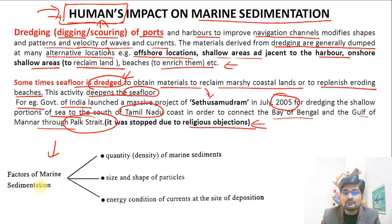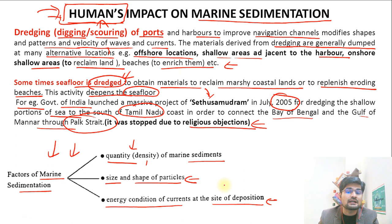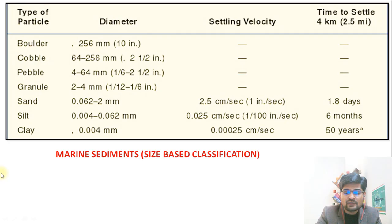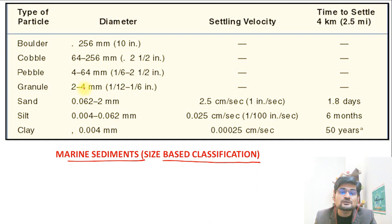The factors for marine sedimentation include: quantity and density of marine sediments, size and shape of particles, and the energy condition of currents at the site of deposition. Now for a size-based classification of marine sediments — similar to what we discussed for soil — we have boulder, cobble, pebble, granule, sand, silt, and clay.